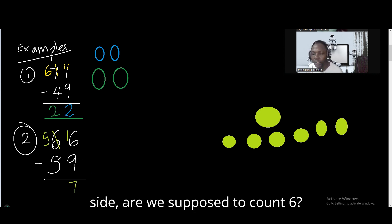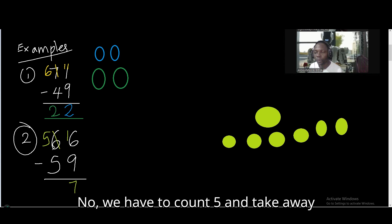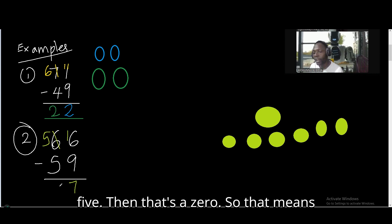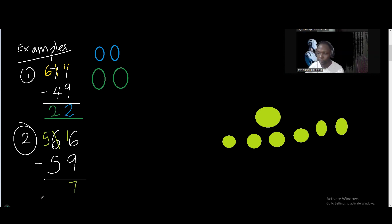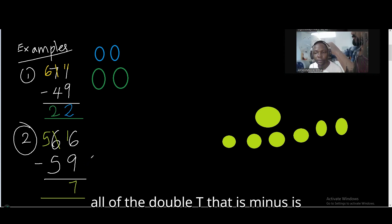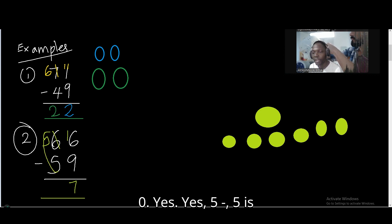So we've got 7 left. Now on the other side, are we supposed to count 6? No, we have to count 5 and take away 5. Then that is 0. So that means our answer is 7. Because 5 minus 5 is 0.